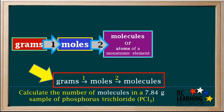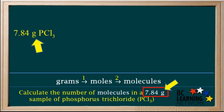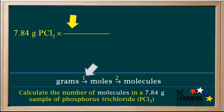So we summarize our steps in a plan: grams to moles to molecules. We start by writing down 7.84 grams of PCl3. And our first step is to convert grams of PCl3 into moles, so we multiply by a conversion factor that changes grams of PCl3 to moles.